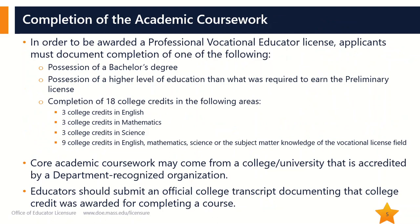An official college transcript will bear the signature of the registrar. The core academic coursework may be completed at any accredited university. If an educator has previously earned a college degree or completed any coursework, it is possible that they have already completed courses that may be accepted towards this requirement. A listing of department-recognized national accrediting organizations can be found at the link below. If an educator would like to know where they stand in terms of the core academic credits, they should submit an application for the professional license so that the licensure office may do an official review of the transcripts on file and provide a detailed evaluation. Additional information on the types of courses accepted may be found in the Chapter 74 Guide for Professional Vocational Technical Educator Licensure.